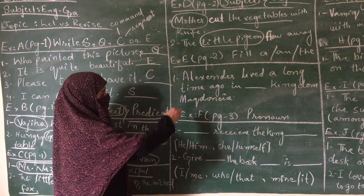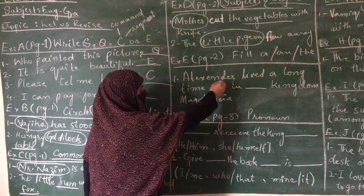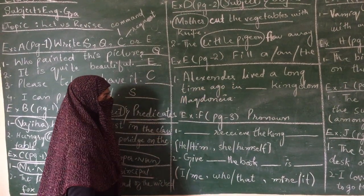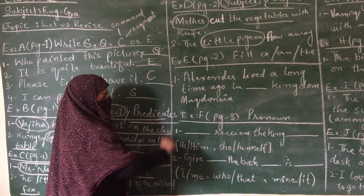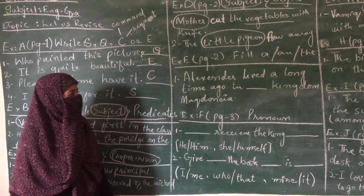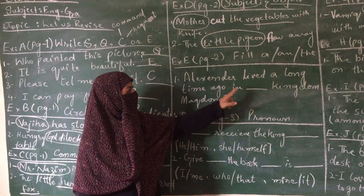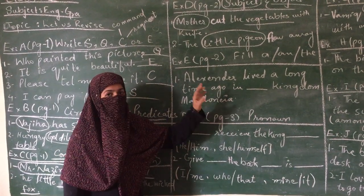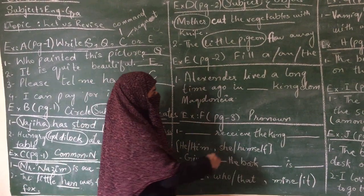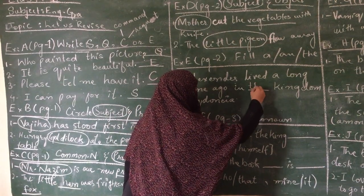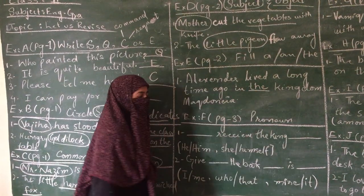Alexander lived a long time ago in the kingdom Macedonium. Here we are talking about Alexander who lived long ago in a kingdom, a specific kingdom, a specific place. That's why we put the in this kingdom.